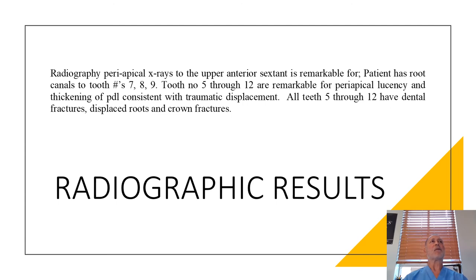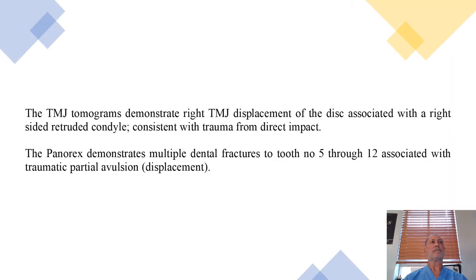Radiographic results are remarkable for requiring root canals to teeth 7, 8, and 9. Tooth numbers 5 through 12 are remarkable for periapical lucency and thickening of the PDL, consistent with traumatic displacement. All five teeth, numbers 5 through 12, have dental fractures, displaced roots, and crown fractures. The TMJ tomograms demonstrated right TMJ displacement of the disc associated with a retruded right-sided condyle, consistent with trauma from direct impact. The panoramic X-ray demonstrates multiple dental fractures to tooth numbers 5 through 12, associated with traumatic partial avulsion and displacement.